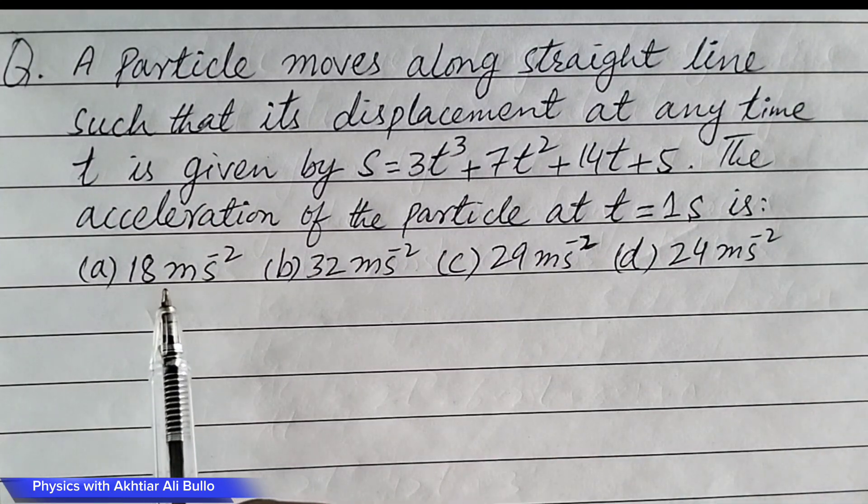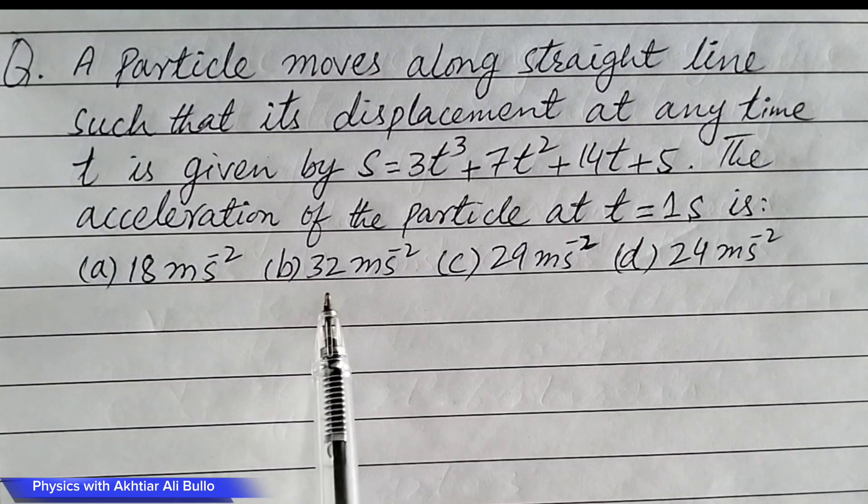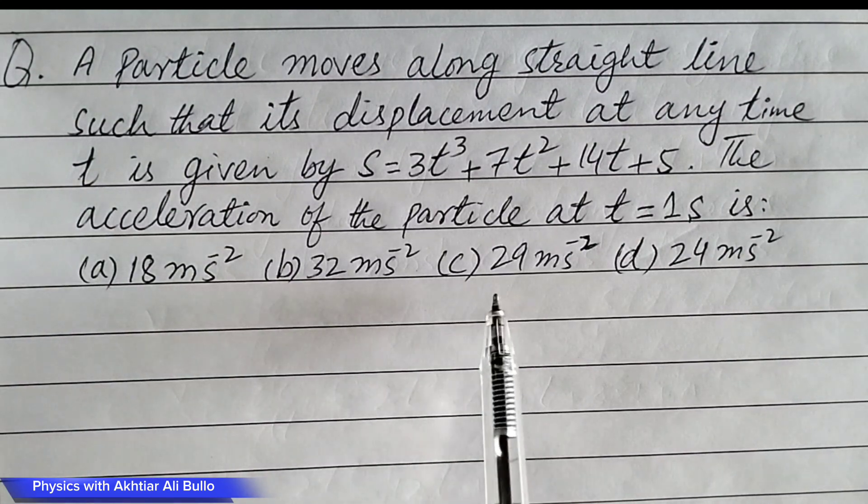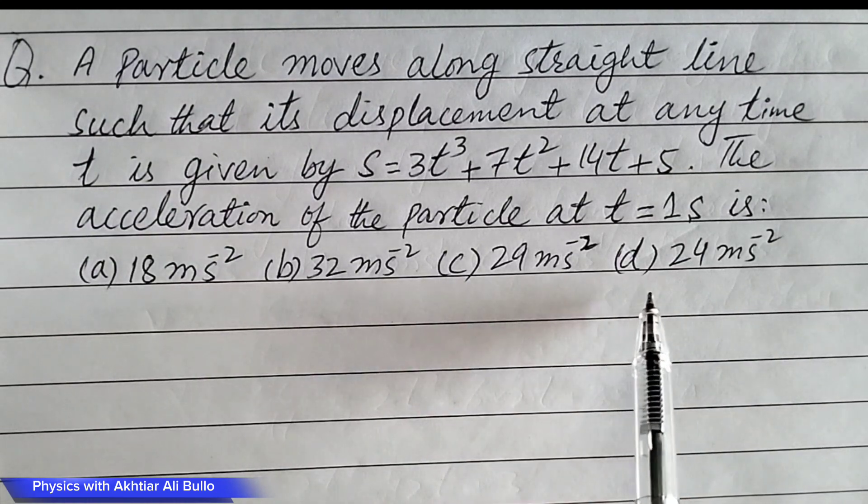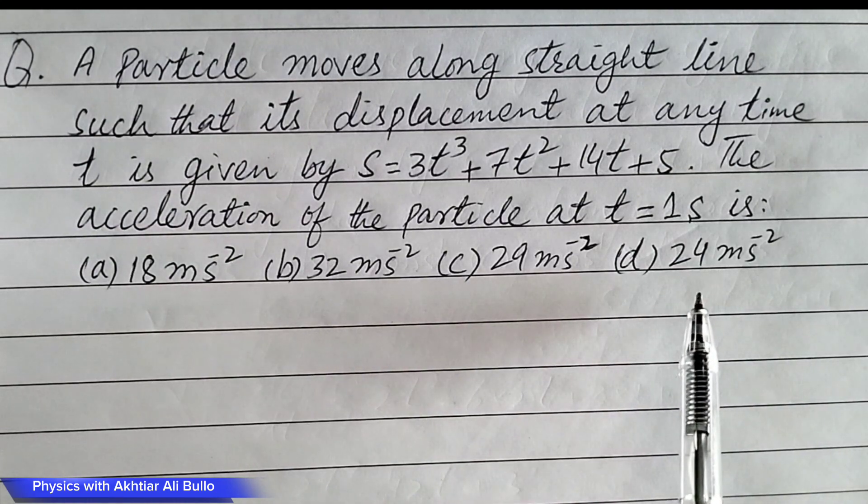(a) 18 meter per second square, (b) 32 meter per second square, (c) 29 meter per second square, (d) 24 meter per second square.